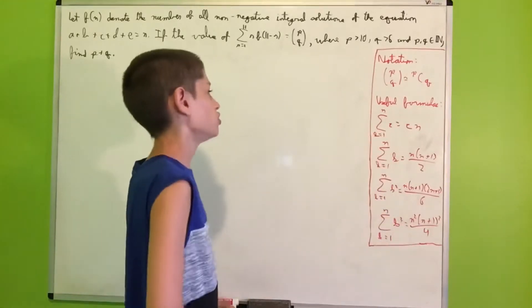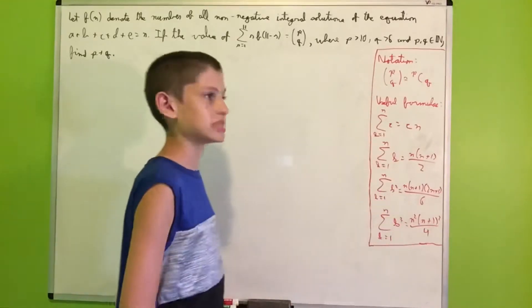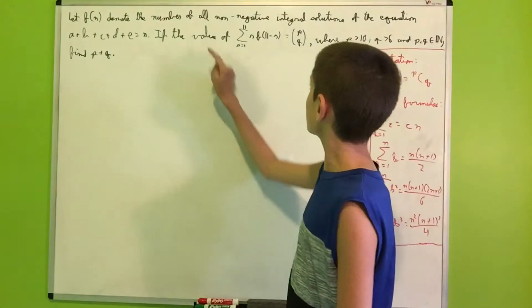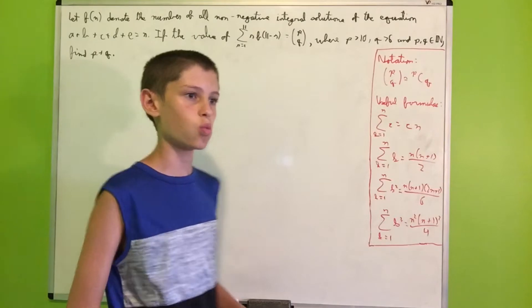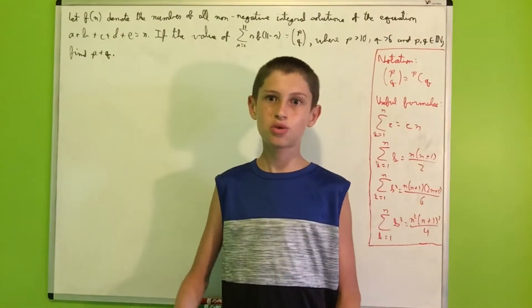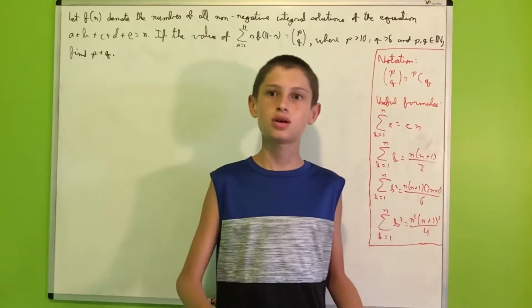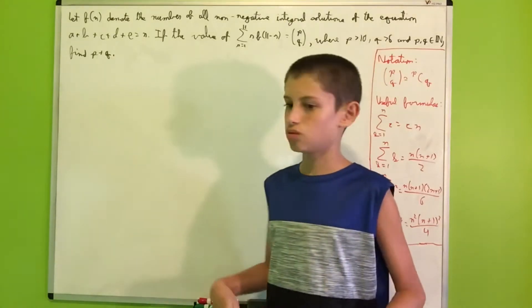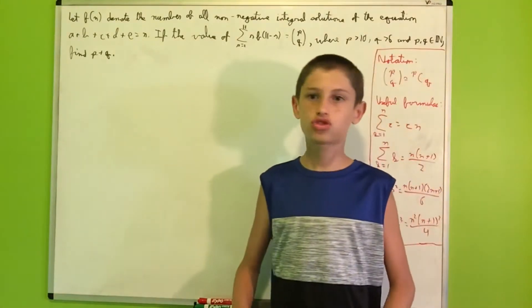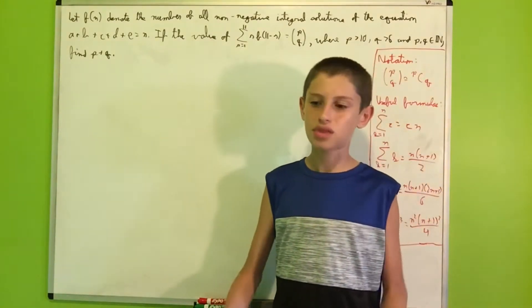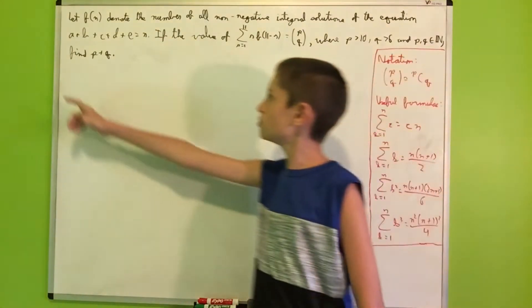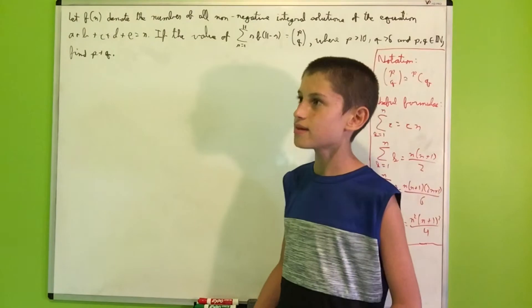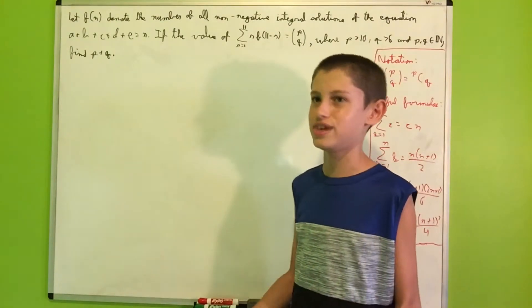I've also written down some useful formulas we'll need throughout the problem. First of all, we have to clarify 'non-negative integral solutions.' Some people consider 0 as being both positive and negative, but some consider it neither. We'll choose 0 to be negative, as I think the textbook also did — therefore 0 will not be allowed as a solution to this equation.